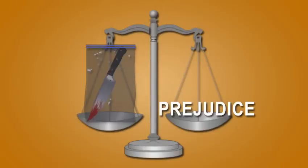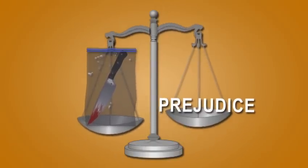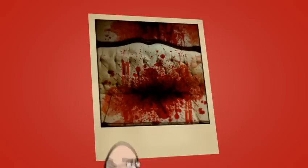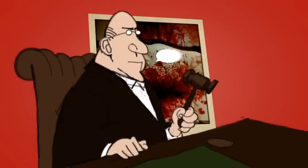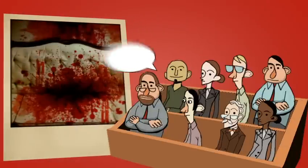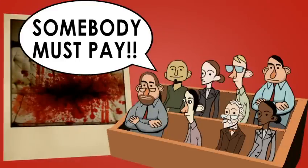First, a court must determine whether the value of the evidence is outweighed by unfair prejudice. A photograph of a crime scene displaying a lot of blood or a dead body will be relevant as proof of a murder. However, a grisly photograph will also very likely inflame the jury, who will look to hold someone responsible.